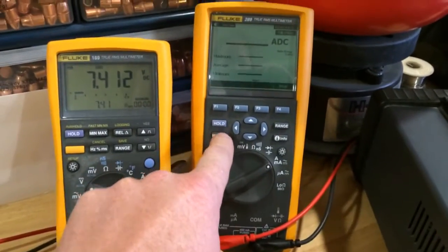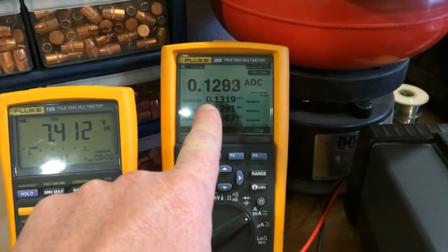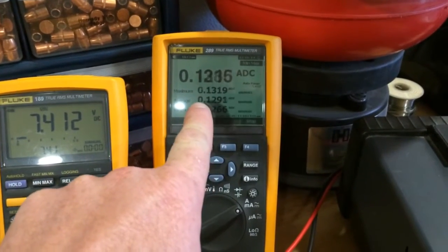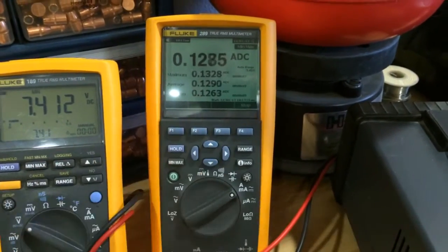We'll do the same thing for current. This meter is a little nicer. So here's our real-time current, our maximum current, our average current, and our minimum current.